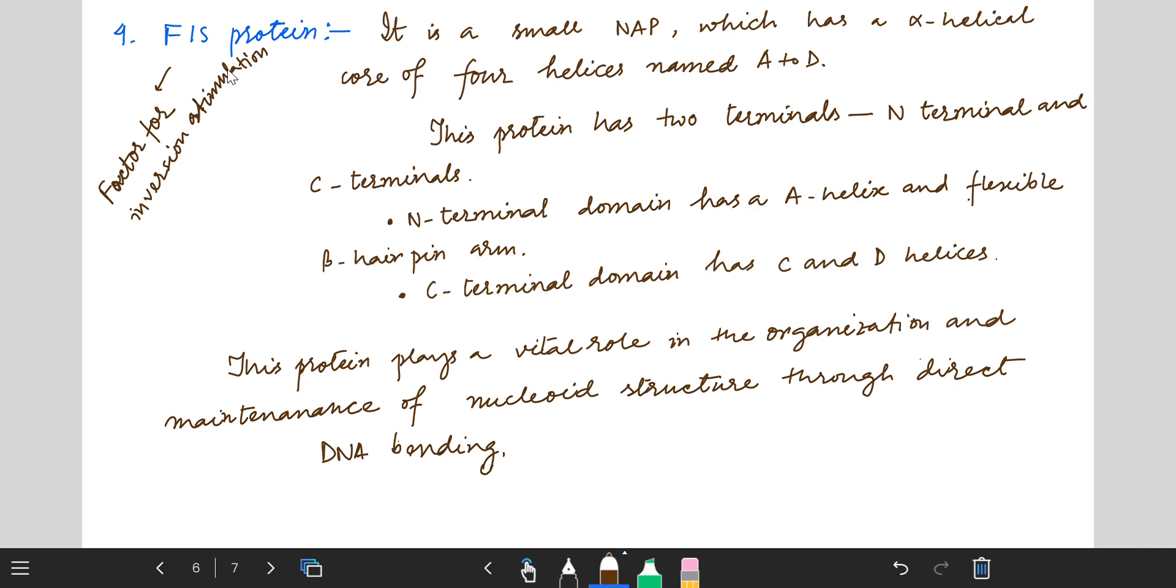This protein has two terminals: N terminal and C terminal. The N terminal domain has an A helix and flexible beta hairpin-like arm. The C terminal domain has C and D helices. The N terminal part takes part in DNA inversion process.